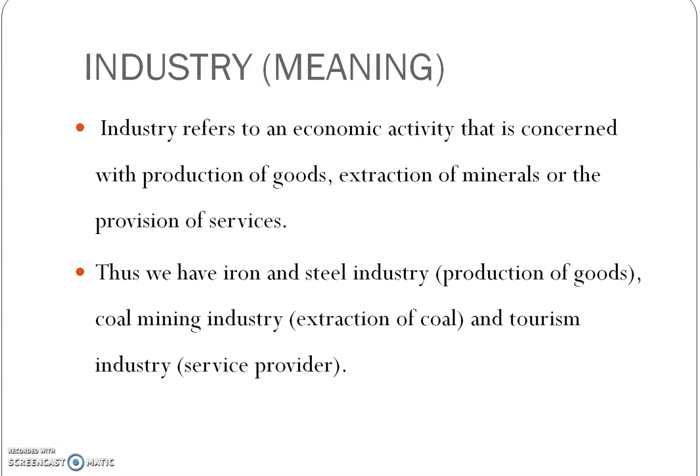Let us begin with the meaning of industry. An industry, just like agriculture, refers to an economic activity. And this economic activity is concerned with the production of goods, with the extraction of minerals, or the provision of services. Based on these three activities, we have the iron and steel industry, concerned with the production of goods; the coal mining industry, concerned with extraction; and the tourism industry, which is a service provider. So industries are economic activities concerned with: number one, producing goods; number two, extracting minerals; and number three, providing services.